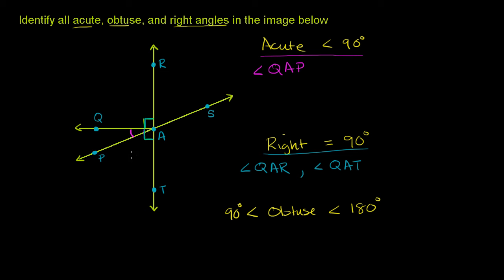And then another acute angle is angle PAT. And once again, we know that because if we add these two angles together, you get 90 degrees. So each of them have to be less than 90. And we're assuming that neither of these angles are zero degrees.